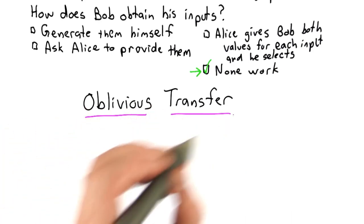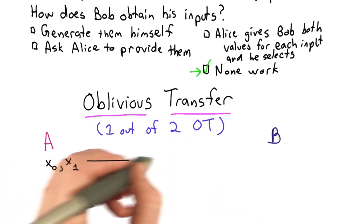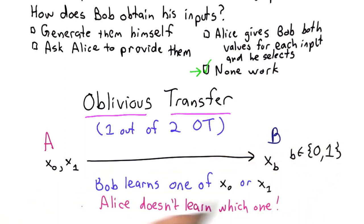What we need is something called oblivious transfer, and in particular, we need what we'll call one out of two oblivious transfer. What that means is Alice can create two values, x0 and x1. Bob will obtain one of those values, but Alice doesn't learn which one Bob learned. Bob can only obtain one of the two values, but Alice doesn't know which one Bob obtained.